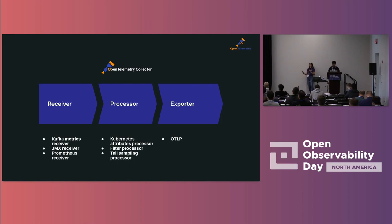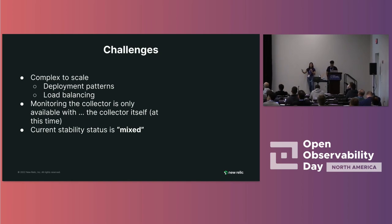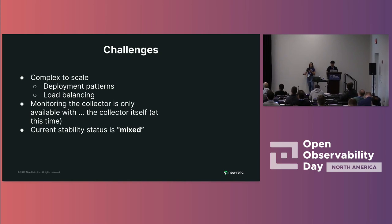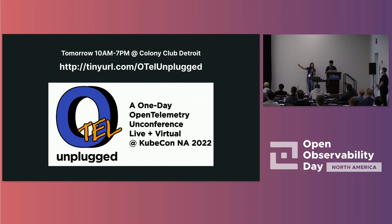Here are some challenges to consider when using the OpenTelemetry Collector. First, it can be complex to scale — you'll need to consider deployment patterns and load balancing as your system grows. Second, monitoring the collector is only available with the collector itself at this time, which is not ideal. Third, the current stability status is mixed, as core components are at varying levels of stability. That's all we have — we hope to see you tomorrow at the vendor-neutral OpenTelemetry community event at the Colony Club Detroit. Thank you!